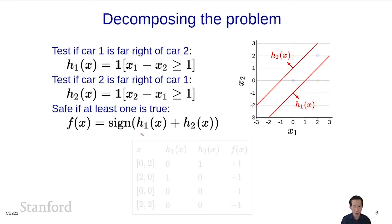Here are some examples. For (0,2), h₁ says no, h₂ says yes, and at least one is enough to make the prediction plus 1. For (2,0), h₁ says yes, h₂ says no, and f is 1 because all it takes is one. For (0,0), both say no and it's minus 1. Same with (2,2), both say no, it's minus 1.